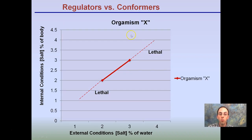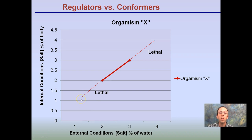Just because an organism is a conformer doesn't mean it can live and survive across the entire salinity scale. There is a range where the organism can live. If the salinity of external conditions gets too low — for example, a shark moving into brackish water — it could be lethal. Or if it's too salty, it can also die. There's a specific range where they can live; too high or too low could lead to death.